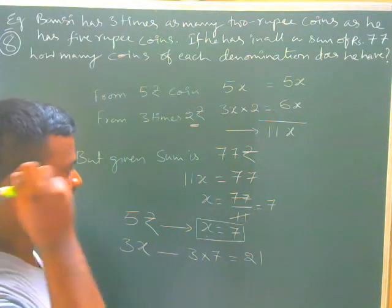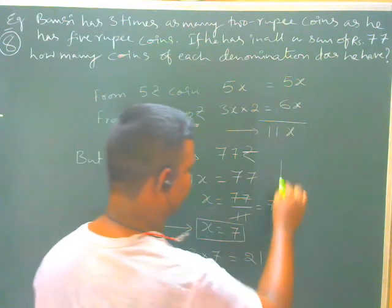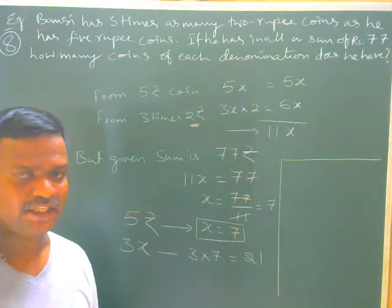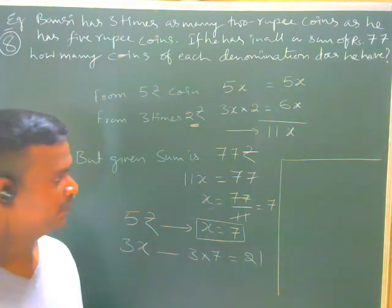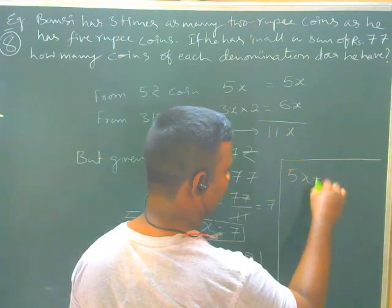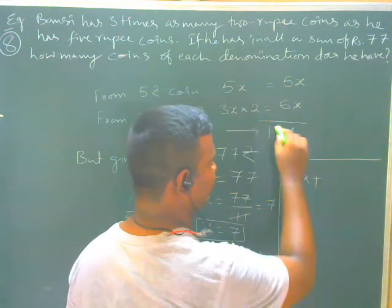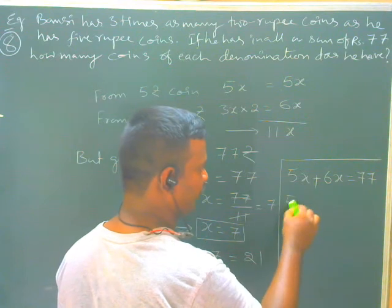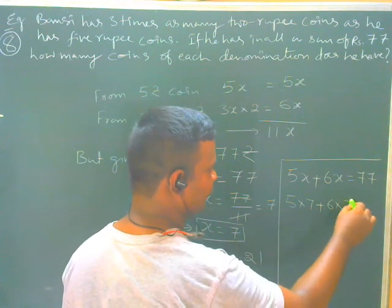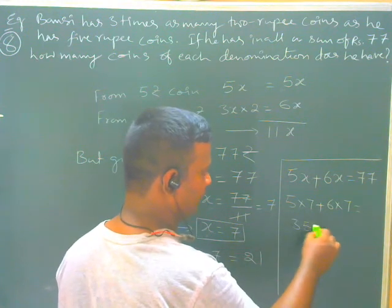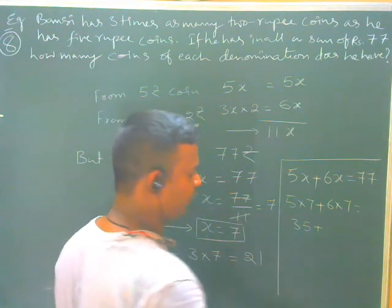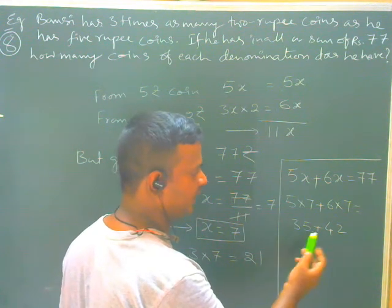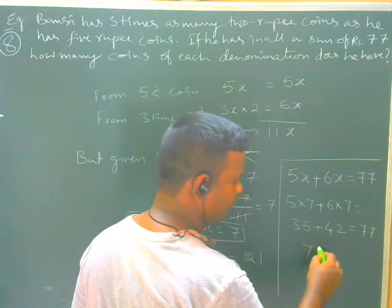Let's verify whether the answer is correct using the equation 5X plus 6X equals 77. Substituting X equals 7: 5 into 7 plus 6 into 7 gives 35 plus 42, which equals 77. That means your answer is correct.